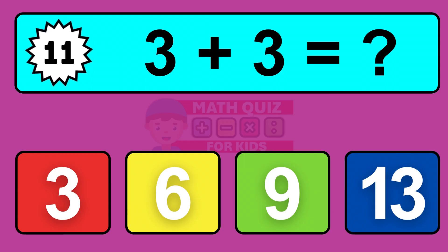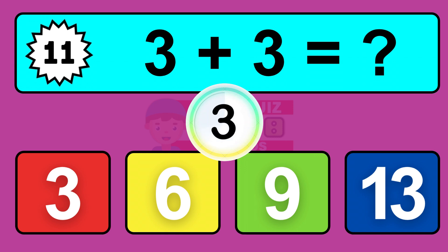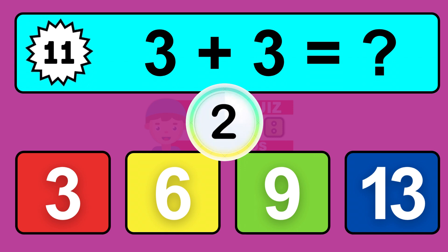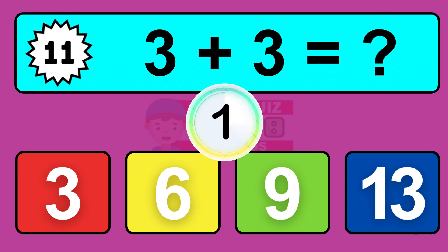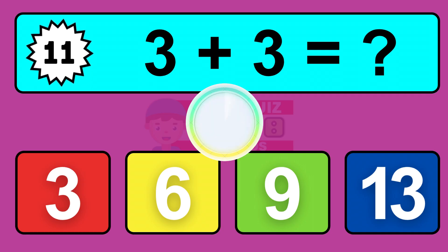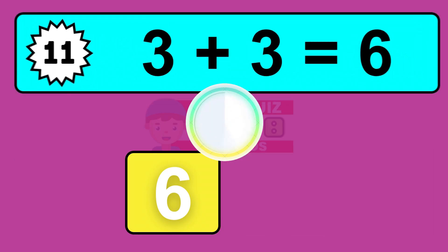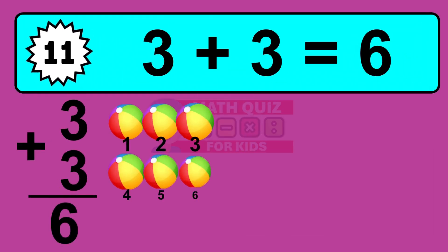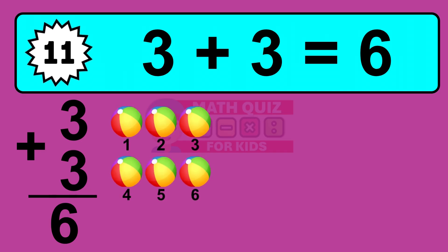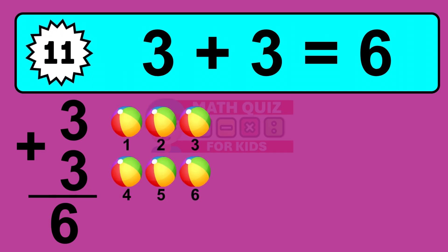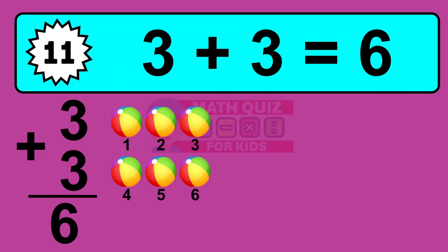Question 11. 3 plus 3 equals what? The answer is 3 plus 3 is 6. Let's count it: 1, 2, 3, 4, 5, 6.